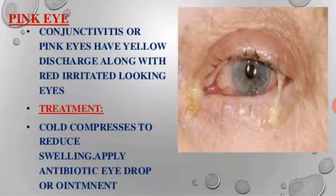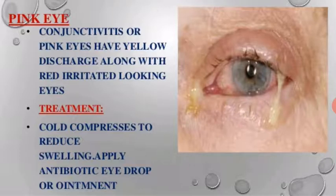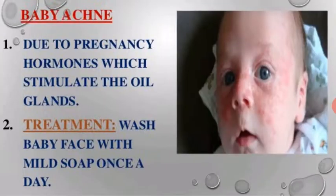Conjunctivitis, also called pink eye, is inflammation of the conjunctiva characterized by yellow discharge along with red, irritated-looking eyes. Treatment: apply cold compression to reduce swelling and apply antibiotic eye drops or ointment.